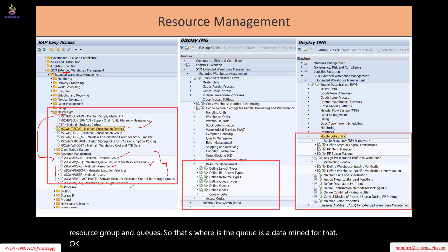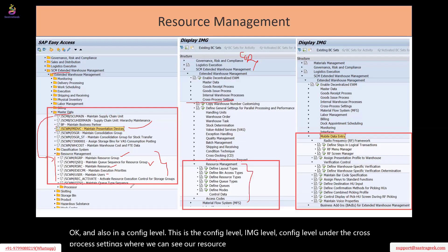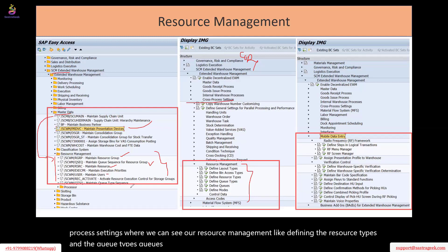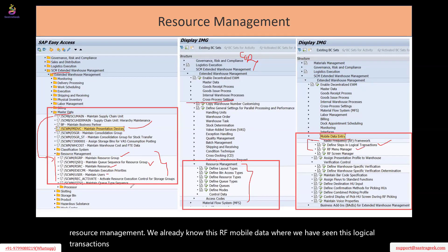At the config level — IMG level, config level — under the cross settings, where we can see our resource management: like defining the resource types, the queue types, queues, determination of the queue management, everything under the resource management. We already know this RF mobile data, where we are seeing these logical transactions, RF menu manager, and RF screen.